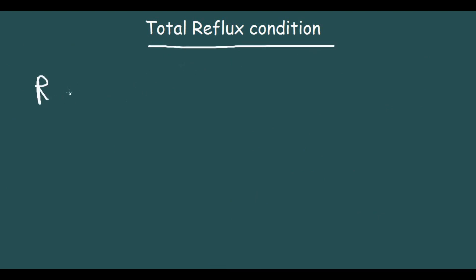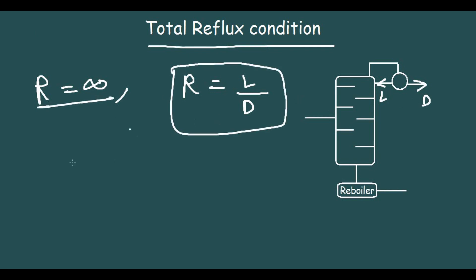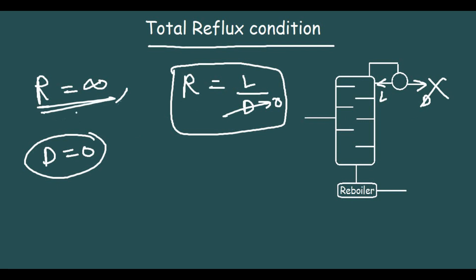Now we discuss the total reflux condition. For total reflux, the reflux ratio R is equal to infinity. Since R = L/D, if R is infinity then D equals zero — meaning the entire top product is recycled back to the distillation column and nothing is taken out. This is what R equals infinity means.